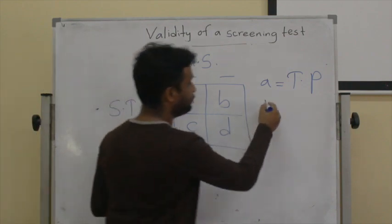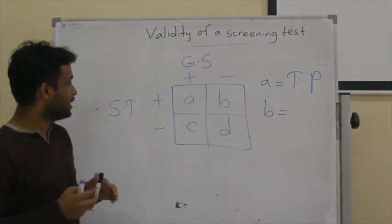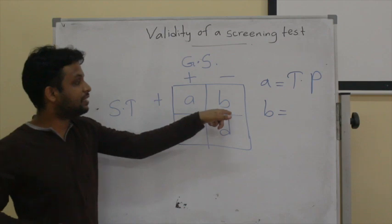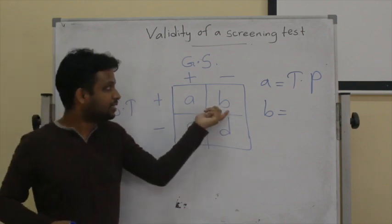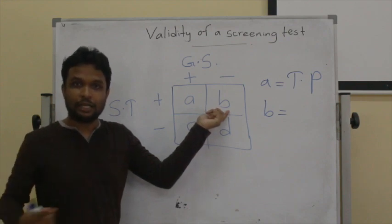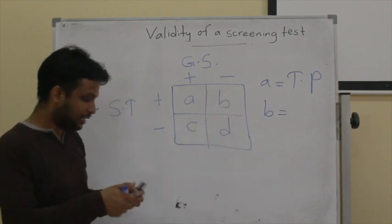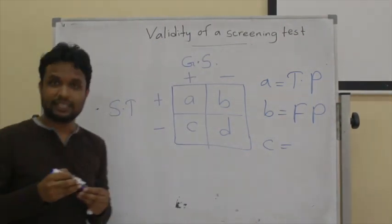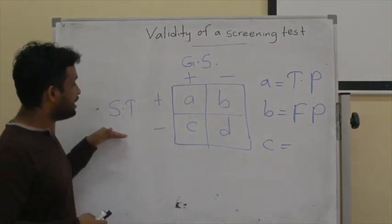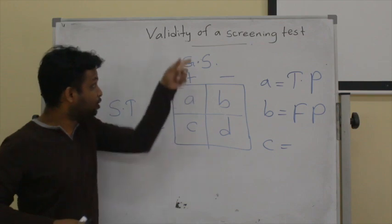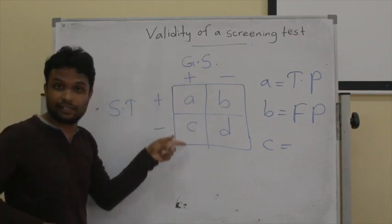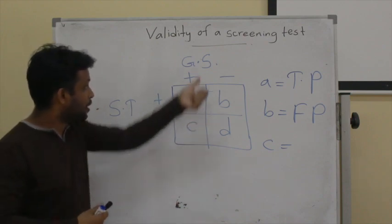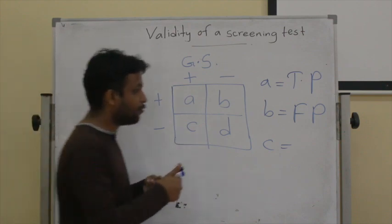Cell B represents patients who are positive for the screening test but whose gold standard test is negative. They are positive for the screening test, but it is not correct because they don't have the disease — so we call these false positives. Cell C represents patients who are negative for the screening test but actually have the disease because the gold standard test is positive — so they are false negatives.